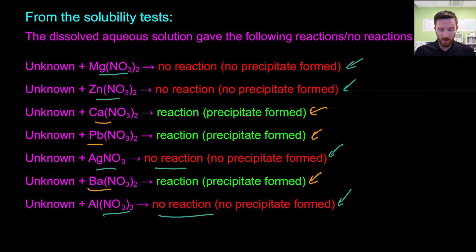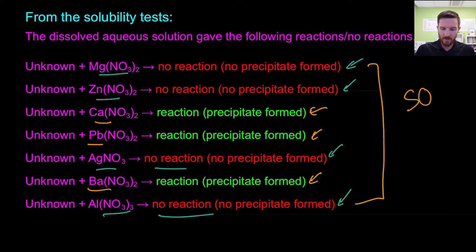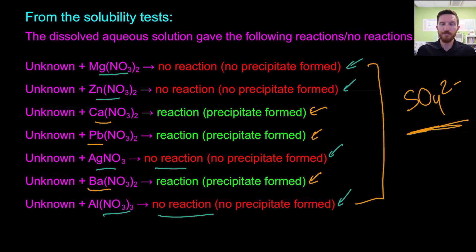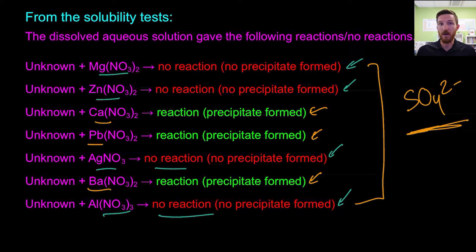If we go back and look at our solubility rules to identify what has a characteristic reactivity like we see here with those different metal ions and summarize all those together, we notice this is going to tell us that we have the sulfate ion present in this solution. So our unknown has the sulfate as the negative ion. We also measured our conductivity and found that it jumped up when we added this compound, indicating that it is an ionic compound.